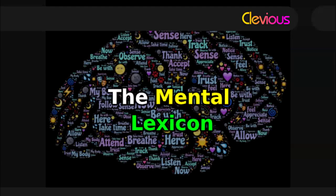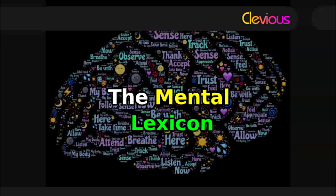There is also electrophysiological evidence for hemispheric distinction between open-class or content words — such as nouns and verbs — and closed-class or function words — such as conjunctions and prepositions. Specifically, a larger N-400 wave is elicited over the frontal, left hemisphere for closed-class words. This suggests that perhaps closed-class words are organized in the left hemisphere, while open-class words are more predominant in the right hemisphere.